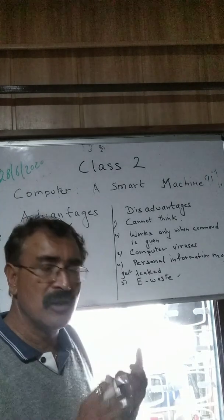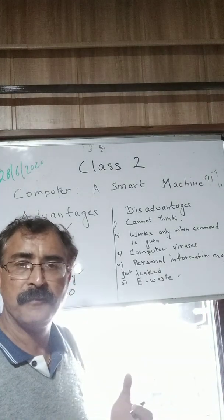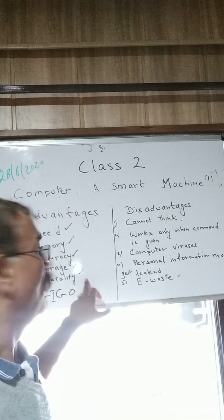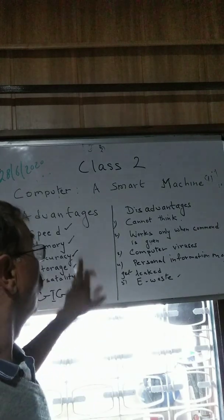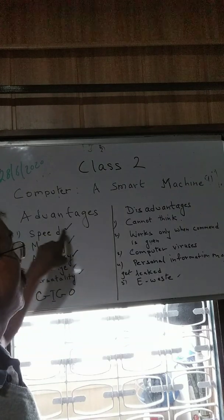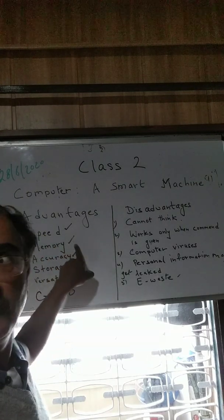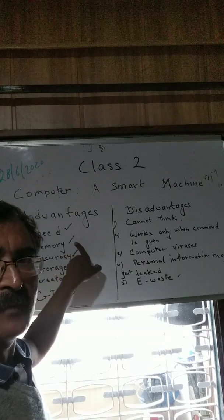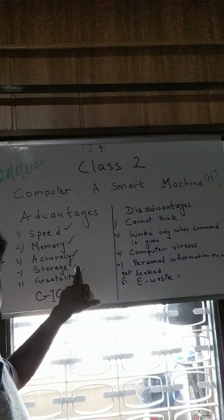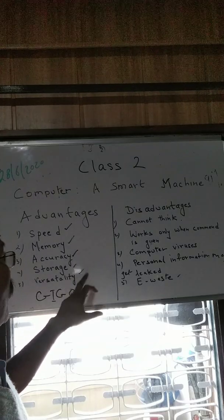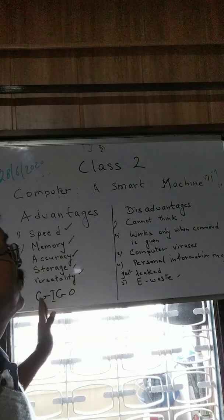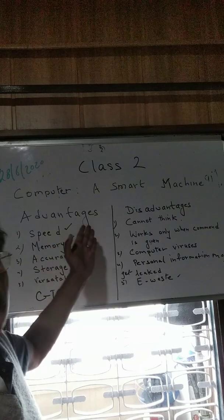Versatility — the computer is multitasking. You can listen to music, see movies, play games, and search for information. To recap the advantages: speed — the computer works very fast; memory — it has very large memory and never forgets; accuracy — it is always correct; storage — you can store a large amount of data; and versatility — many types of work can be done.